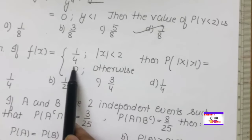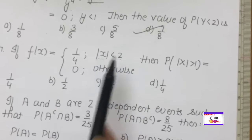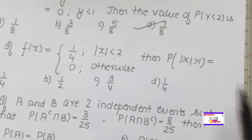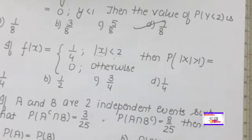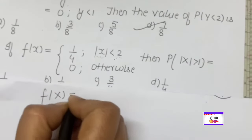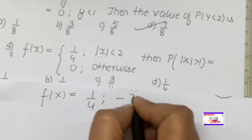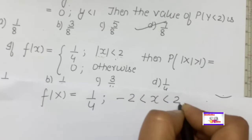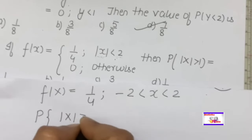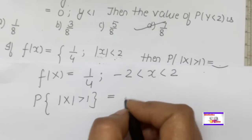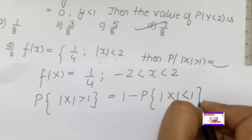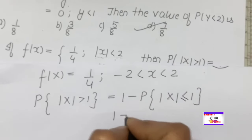If f(x) = 1/4 over a given limit involving absolute value, find the probability. First, understand that since |x| ≤ 2, the limit is from minus 2 to plus 2. The probability to find involves an absolute value condition. Since it is a greater than condition, apply the complementary law and convert it to a less than condition so we can solve it easily.